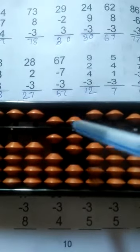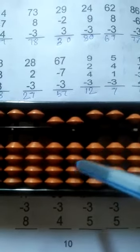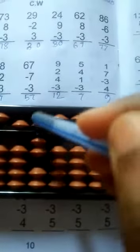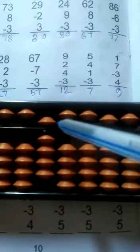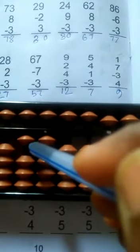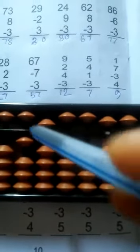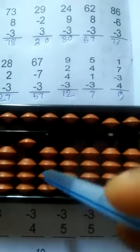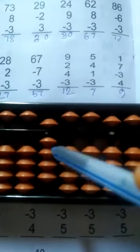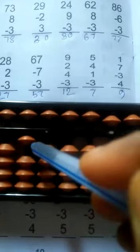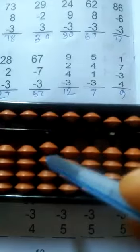67. Less 7, less 7, less 3. Answer is 57. Add 9, add 2, add 4, less 3. 8. Less 7. Answer is 57.